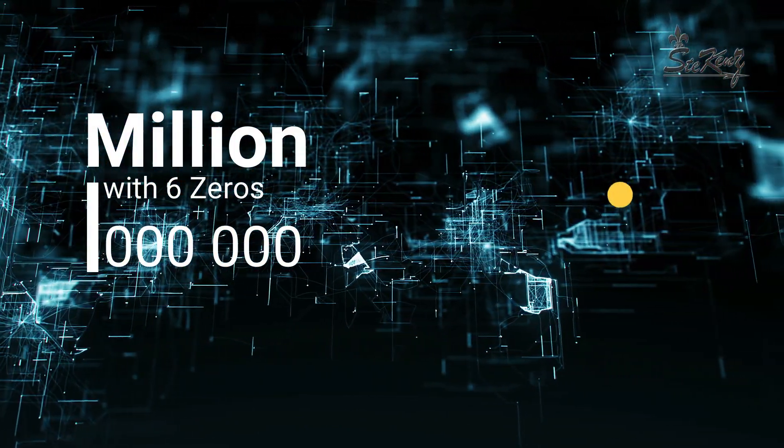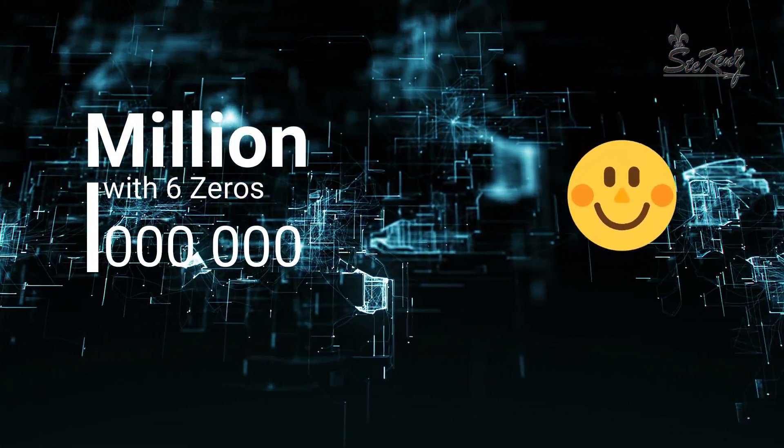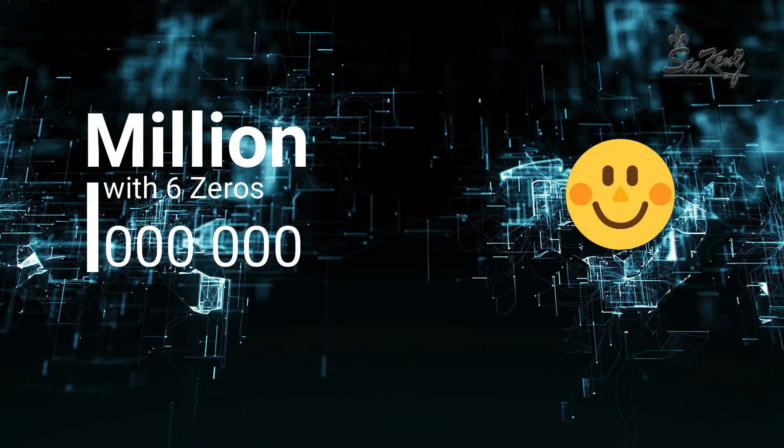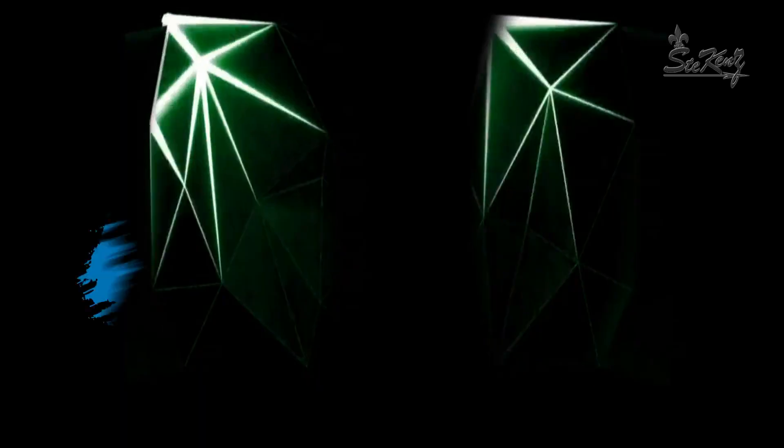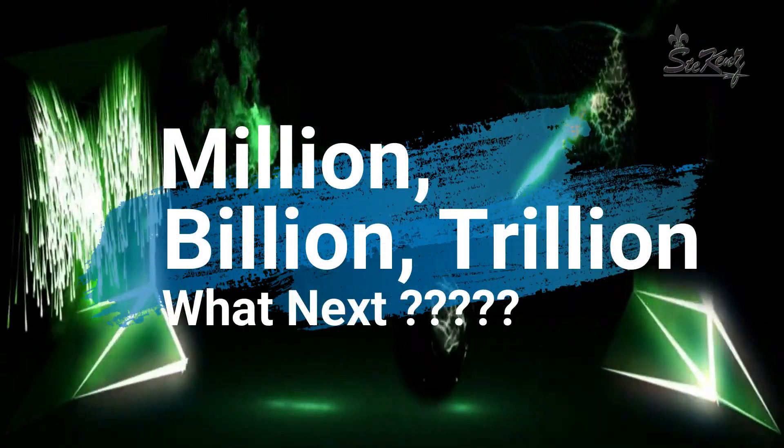One followed by six zeros is the amazing number called million in the international system. If you ask a friend what place value comes after million, many would answer billion, some would say trillion, but it is very unlikely they would get anything beyond trillion. The reason is these numbers are not common knowledge because they are not typically used.